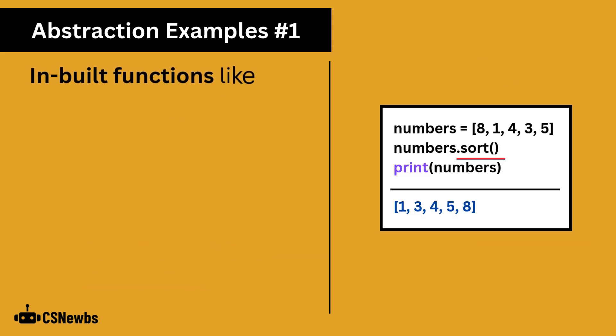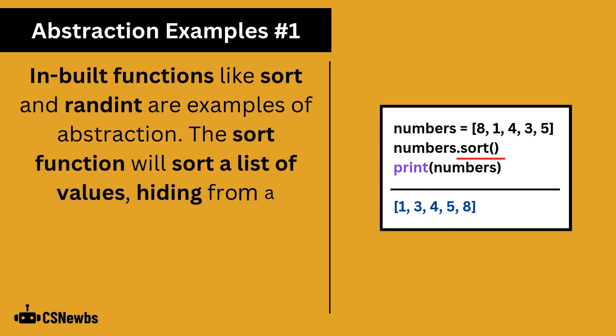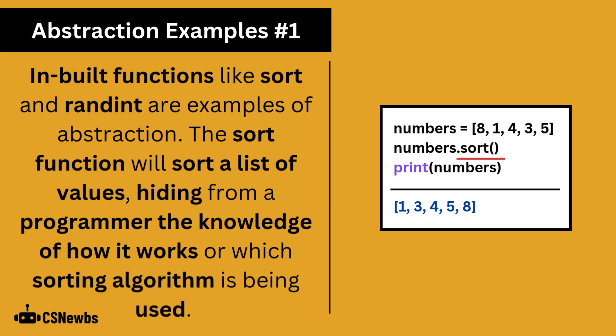Inbuilt functions like sort and randint are examples of abstraction. The sort function will sort a list of values, hiding from a programmer the knowledge of how it works or which sorting algorithm is actually being used.